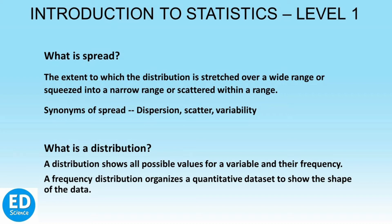To statistically check the spread in data, we measure how far away the numbers in a data set are from the mean or median. These measurements are called measures of spread. We can calculate spread in different ways. The most common measures of spread are range, IQR, variance and standard deviation. We had covered range and IQR in the previous session, so now we shall explore variance and standard deviation.